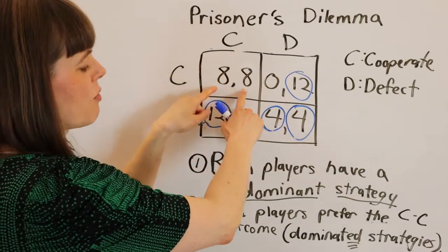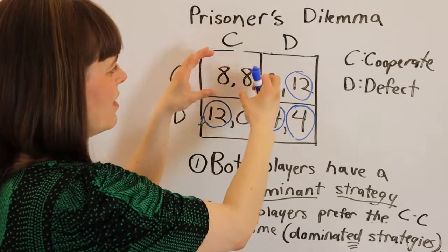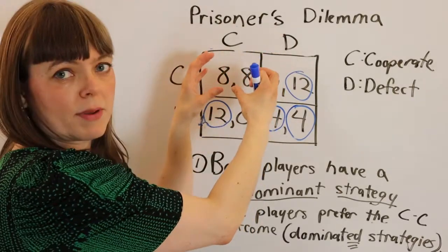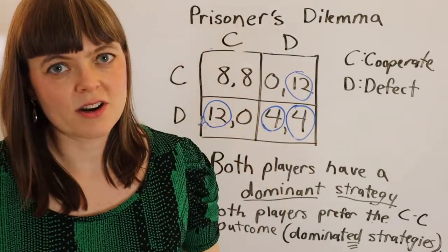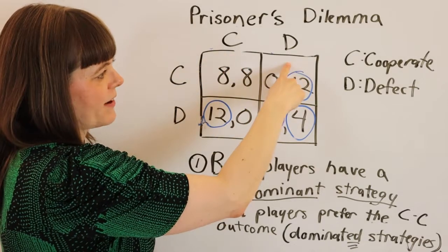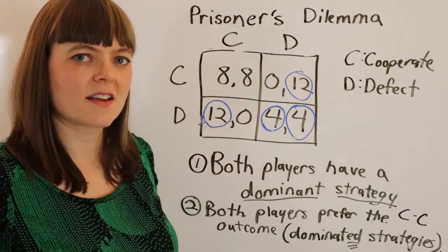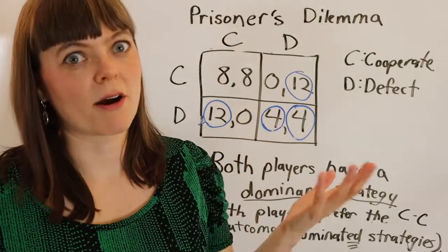But both players prefer the situation where they both played their dominated strategy. They prefer that rather than the Nash equilibrium. It's just really hard to sustain because if we try to cooperate and be up here, both players want to defect, which sends us back here. Economists refer to this as the cooperative strategy and the defective strategy, cooperate or defect, but I'll replace those with the actual strategies in the situations that we're modeling.